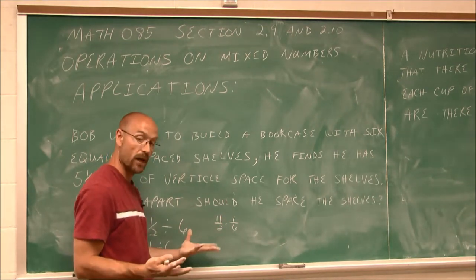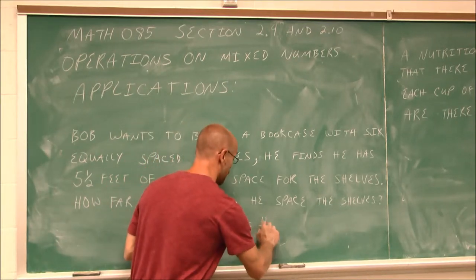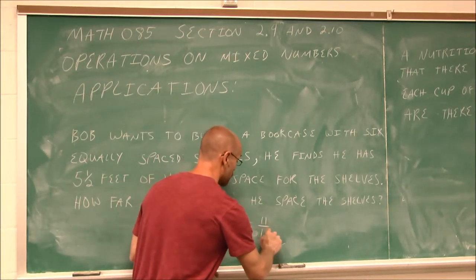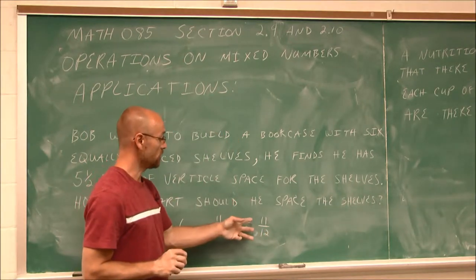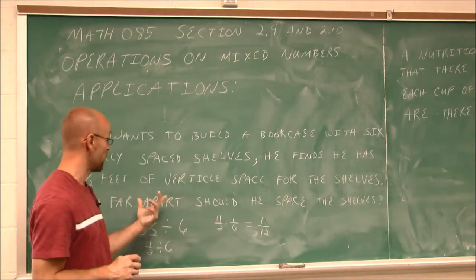So I'm just going to multiply it. 11 times 1 is 11. 2 times 6 is 12. So each shelf has to be spaced 11/12 of a foot apart.